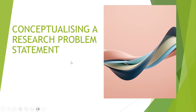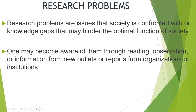To embark on this, we need to first of all understand what research problems are. Research problems are issues that the society is confronted with. Or it may be knowledge gaps that may hinder the optimal function of society — knowledge gaps that may hinder progress. If you read any document and you find problematic themes, you should be able to recognize that this is a problem.